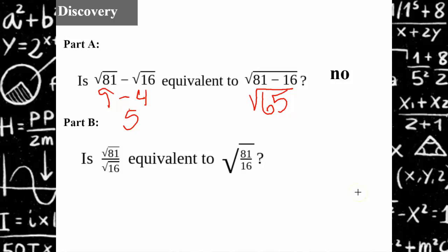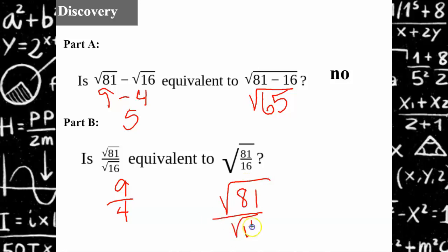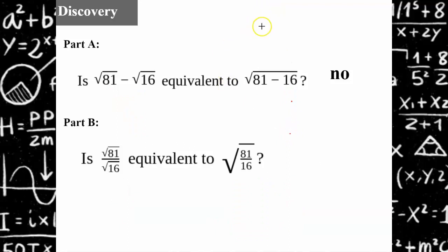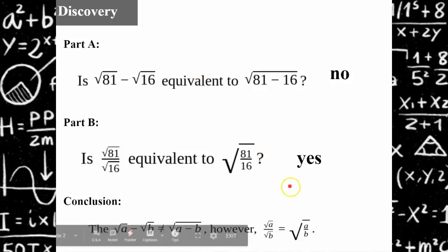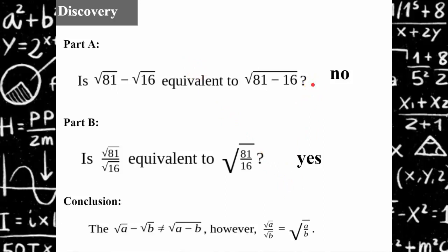In part B, we have the square root of 81, which is 9, divided by the square root of 16, which is 4. And over here, we can split it out, and the square root of 81 is 9, and the square root of 16 is 4. So it works out to be equivalent. So the answer is yes. We can conclude that the square root of A subtract the square root of B is not equivalent to the square root of A subtract B. However, the square root of A divided by the square root of B is equivalent to the square root of A divided by B.